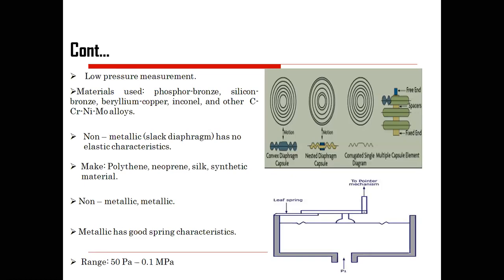For measurement of low pressure, the materials used include phosphorus bronze, silicon bronze, beryllium copper, Inconel, and chromium-nickel mono alloy. Non-metallic slack diaphragms have no elastic characteristics, which is why metallic materials are preferred.